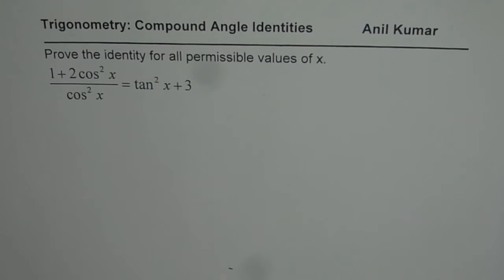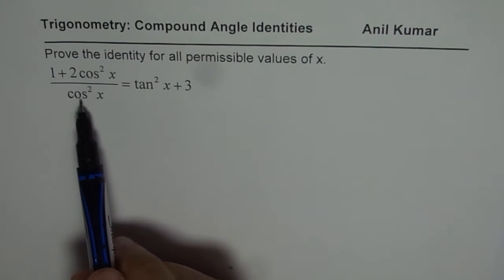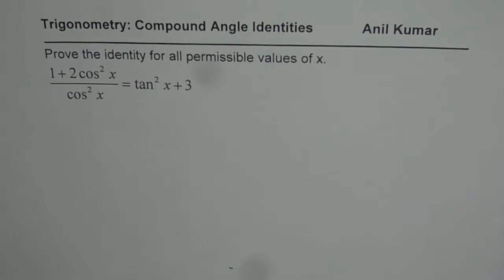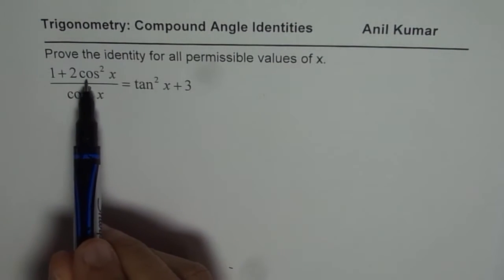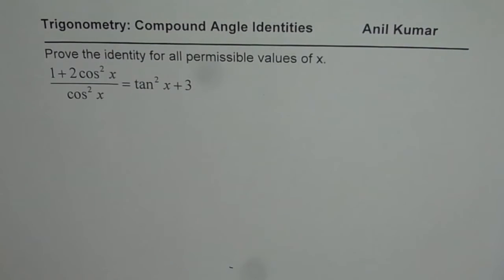I'm Anil Kumar and we'll explore how to prove trigonometric identities. The question is to prove the identity for all permissible values of x. A trigonometric identity should be true for all permitted values, and an identity can always have restrictions. Restrictions can always be found by equating the denominator to 0. The identity we need to prove is: (1 + 2cos²x) / cos²x = tan²x + 3.